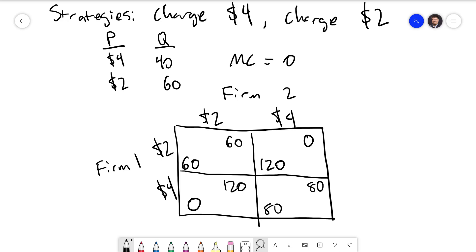Now let's figure out the best responses here. For firm 1, if firm 2 charges $2, they're picking between 60 and 0. They prefer 60. If firm 2 charges $4, now they have a choice between $2 and $4 and getting 120 or 80. 120 is better.